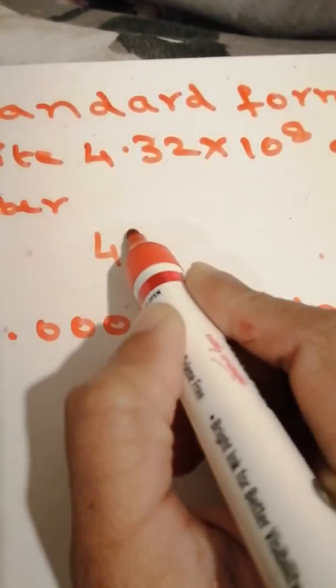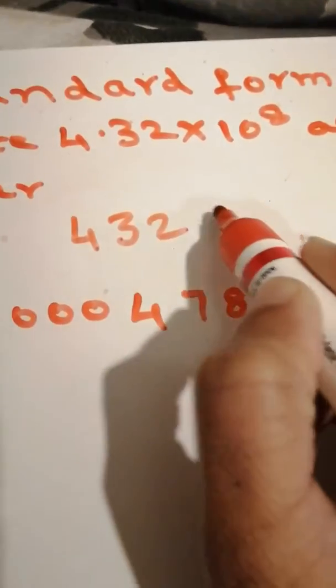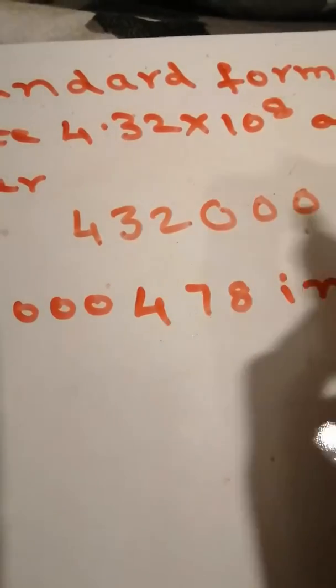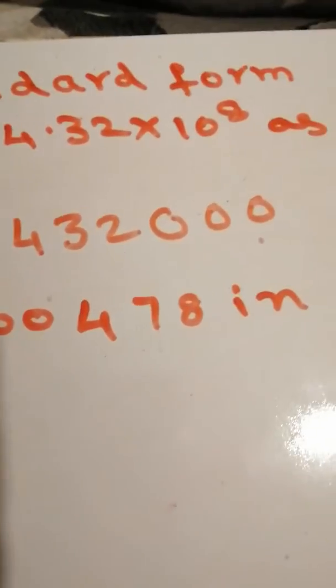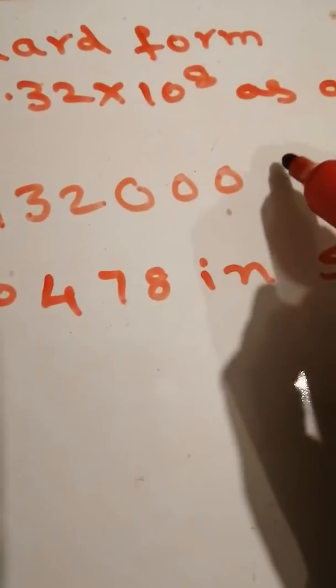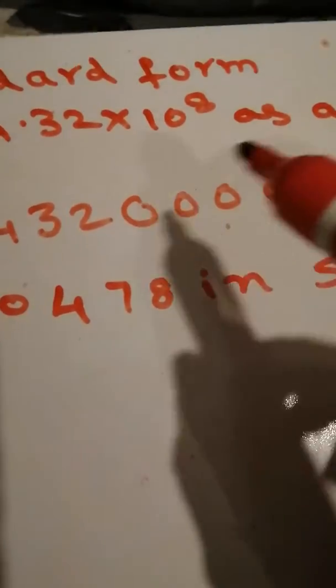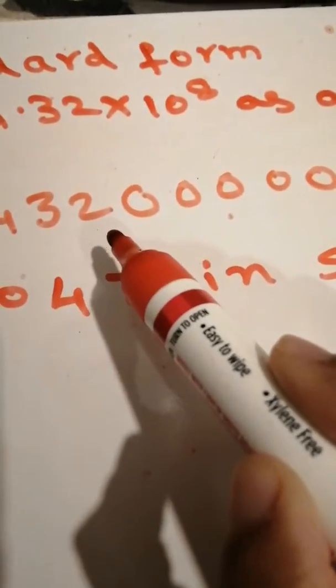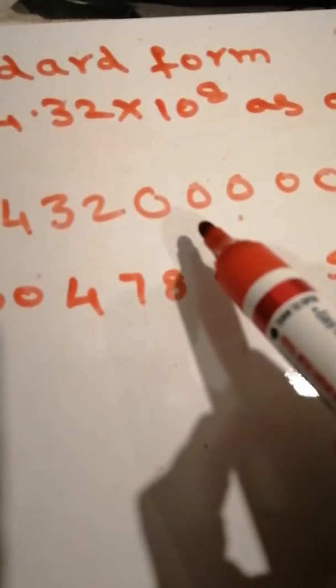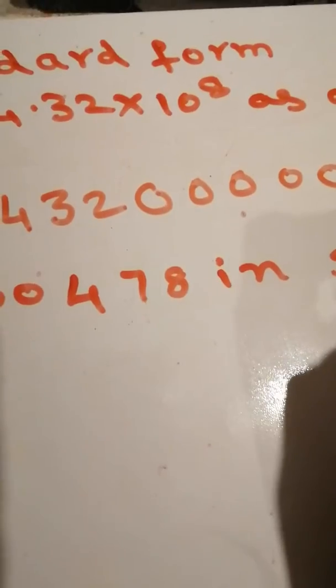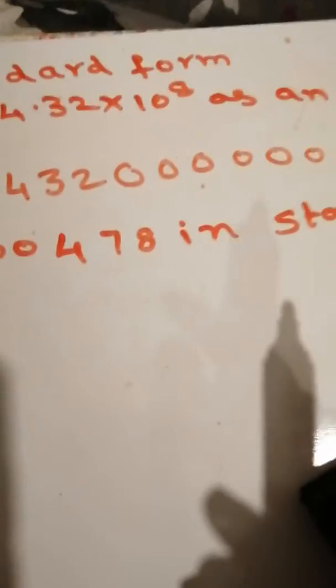So we can write 432000000. 1, 2, 3, 4, 5, 6, 7, 8. This is the way you can write standard form number as an ordinary number.